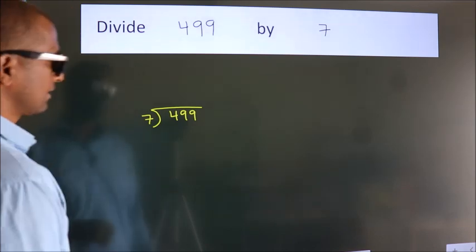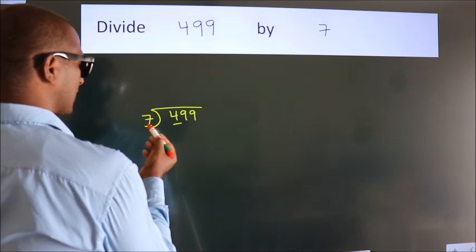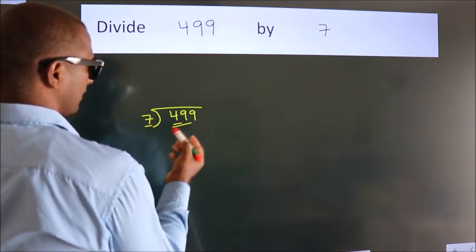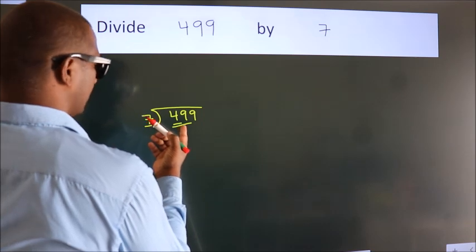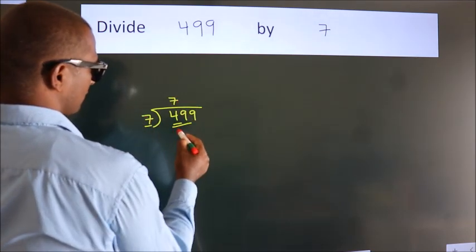Next, here we have 4, here 7. 4 smaller than 7, so we should take two numbers, 49. When do we get 49? In 7 table. 7 7s 49.